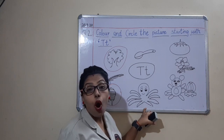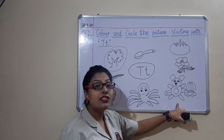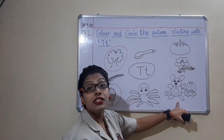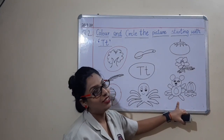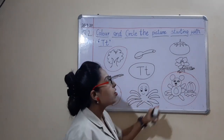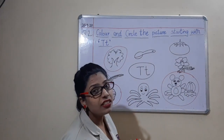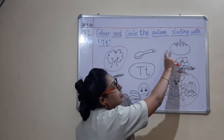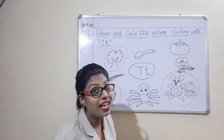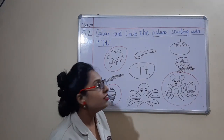T — toys. Yes, these are toys. Sound of letter T? Yes — so we will circle it. R — rose. Sound of letter T? No. T — tomato. Yes, sound of letter T — so we will circle it. Okay children, circle it.